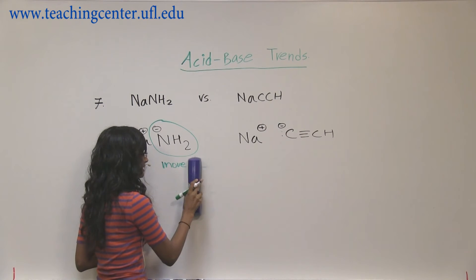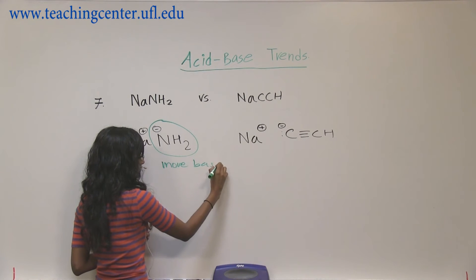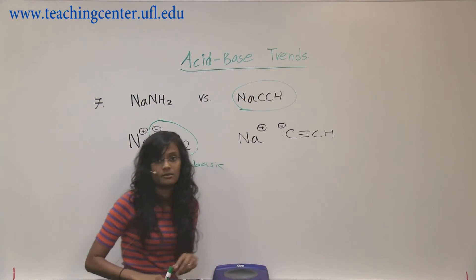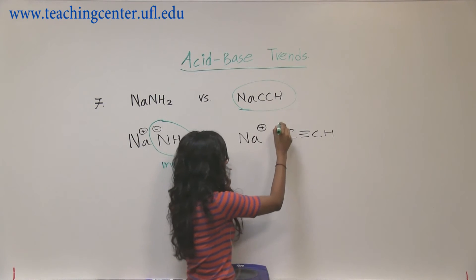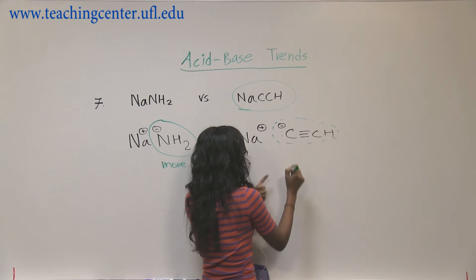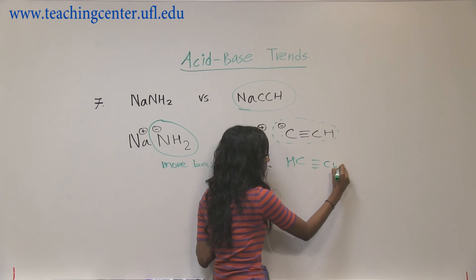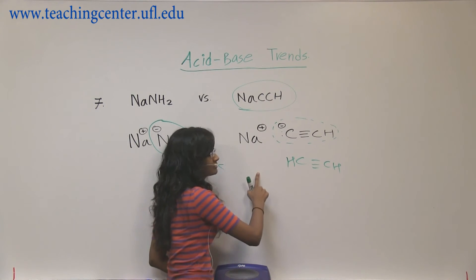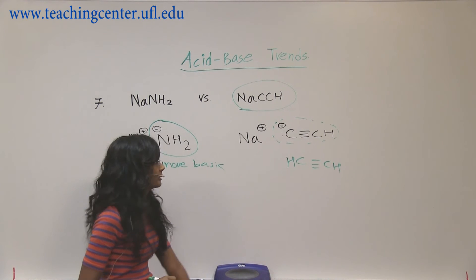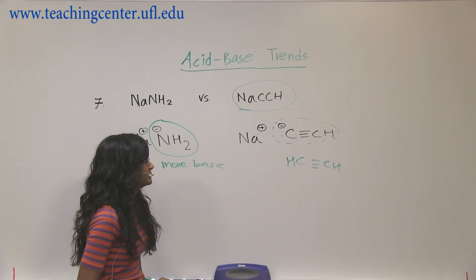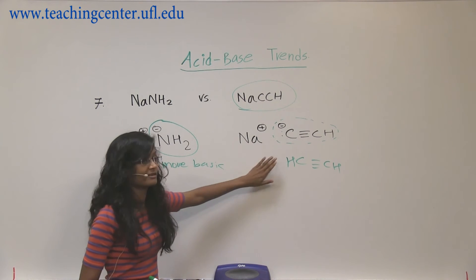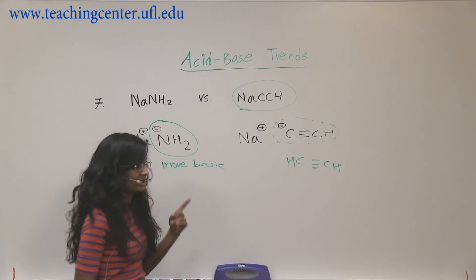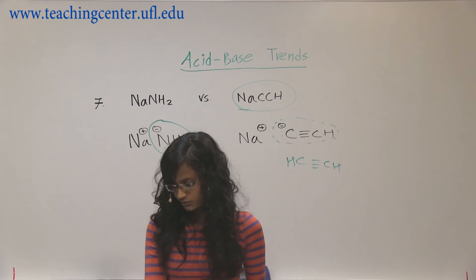So just by that determination, we should know that NaCCH has to be more acidic. If you look at the CCH part, it came from acetylene. We know acetylene also wants to grab one hydrogen and become stable. But NaNH2 is more basic than NaCCH, which means NaCCH has to be more acidic. That's why we're picking NaCCH as our answer for number seven.